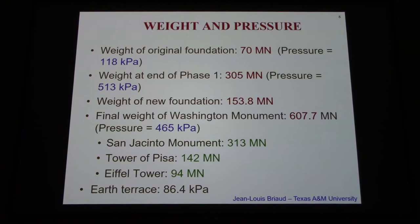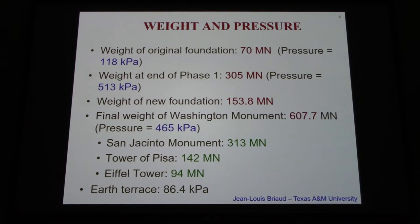That 500 kPa pressure is about the same as the pressure under the Tower of Pisa. The weight of the new foundation was 150 MN — so even though the purpose was to decrease pressure, it definitely increased the load. The final weight of the Washington Monument was 600 MN and the pressure 465 kPa. Casey was very bright in that he was able to decrease the pressure from 513 to 465 kPa while completing the monument. By comparison: San Jacinto Monument is 300 MN, Tower of Pisa 140 MN, Eiffel Tower 94 MN. The Eiffel Tower is 300 meters — the tallest of these — but it's full of holes, and that's why it's not as heavy.